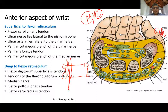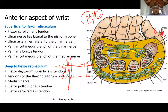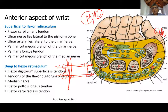This section has been taken at the distal end of the flexor retinaculum, which is why you see the distal row of carpal bones. If you cut through the flexor retinaculum at a proximal level, instead of these four bones you would see the proximal row: scaphoid, lunate, triquetral, and pisiform.